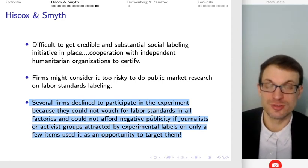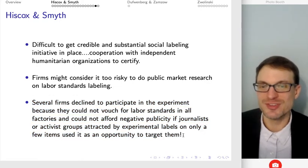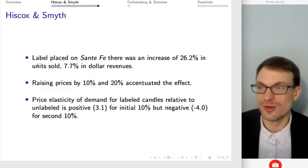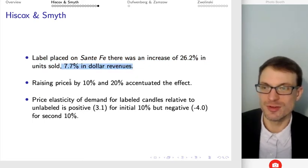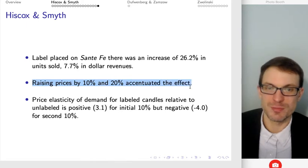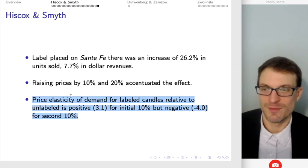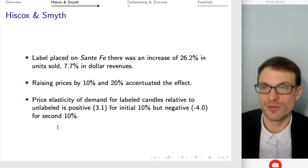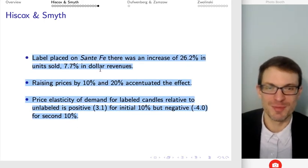That was a concern in 2005, and in 2020 I would imagine it'd be very difficult to redo this field experiment. For the candles, placing the label on Santa Fe produced an increase of 26.2% in units sold and 7.7% in dollar revenues. Raising prices by 10% and 20%, just like with the towels, accentuated the effect. The price elasticity of demand was positive for the initial increase and negative for the second 10% for the candles.